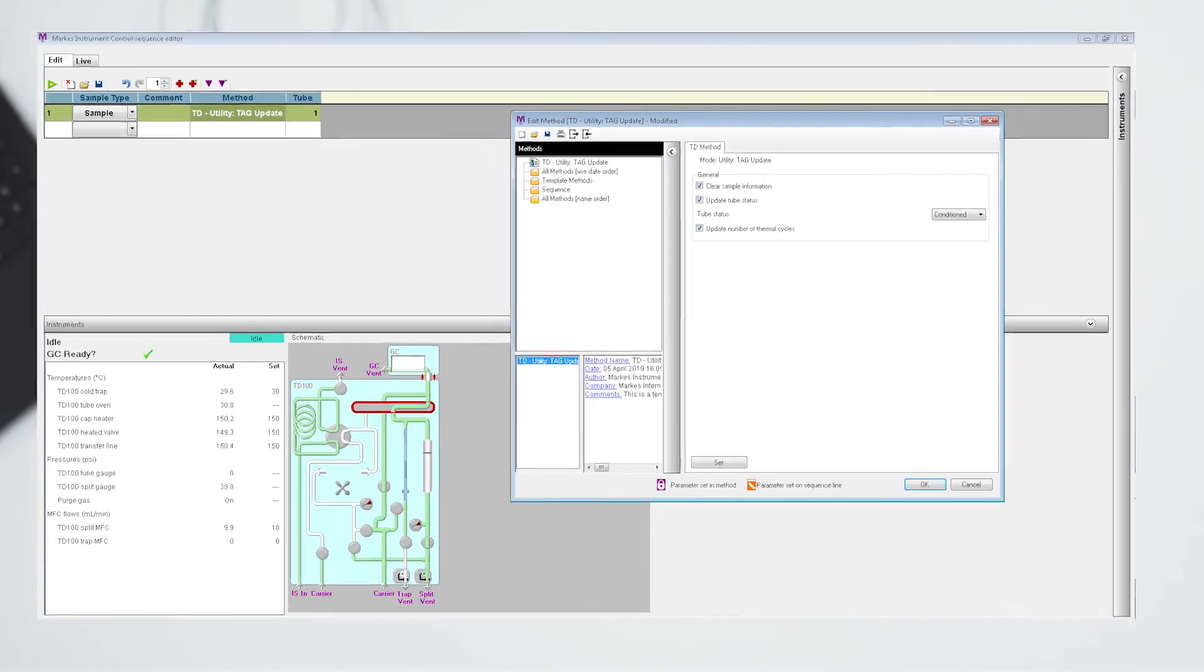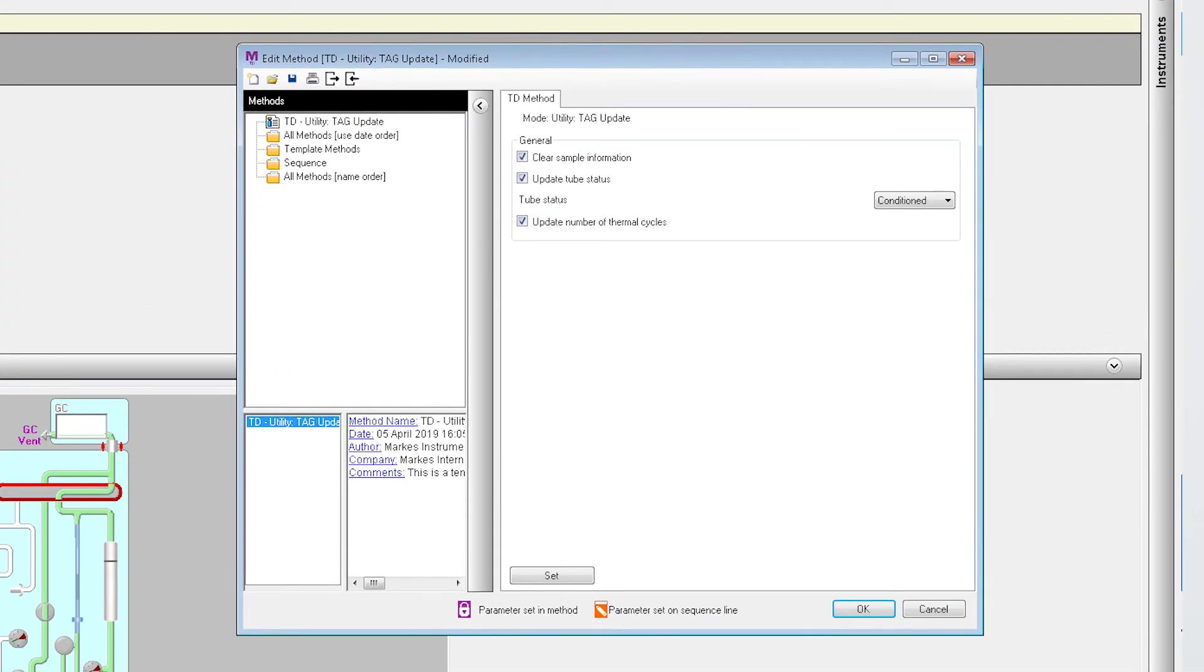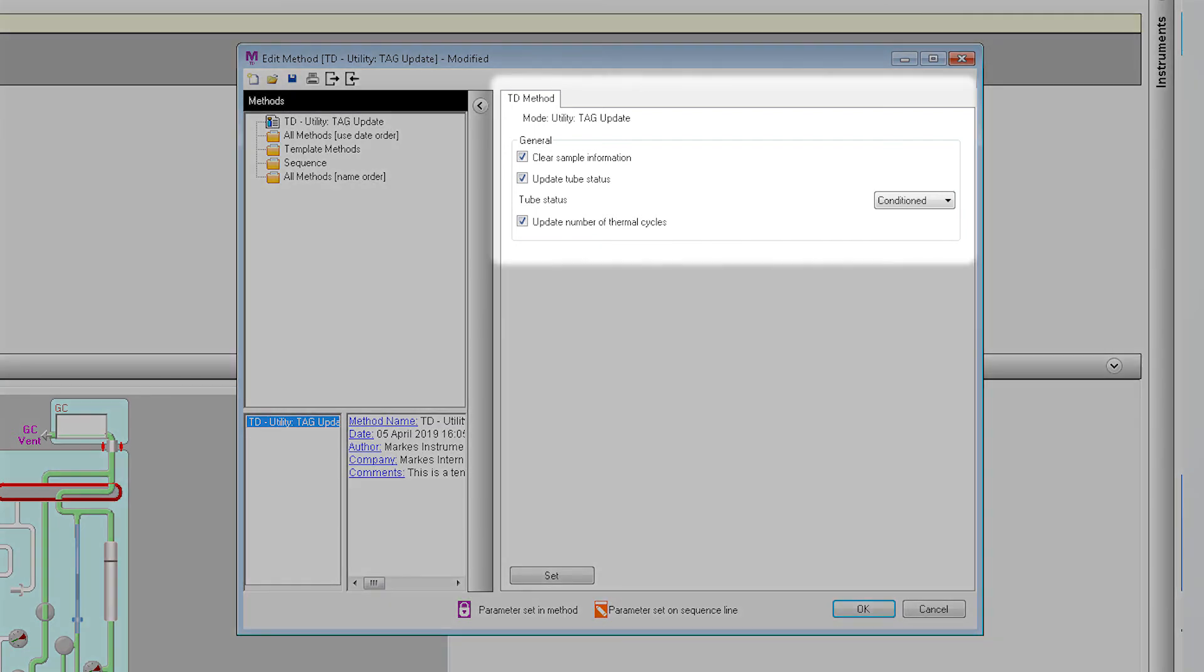To batch update, load all tubes and run the TD utility TagUpdate method. You can use this method to batch update tube status, number of thermal cycles or clear sampling information from the tags.